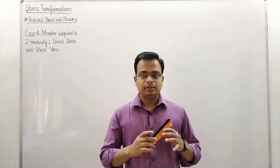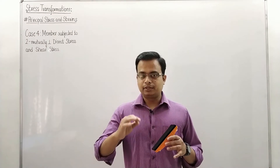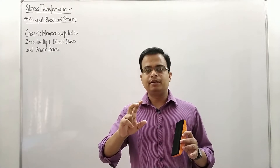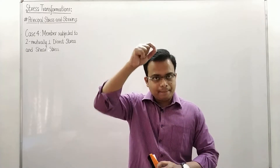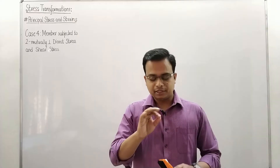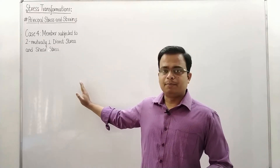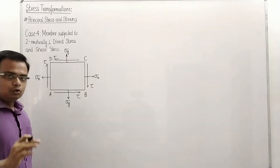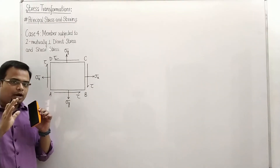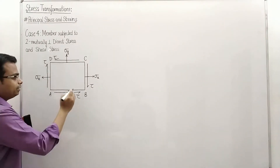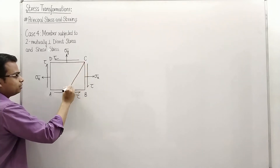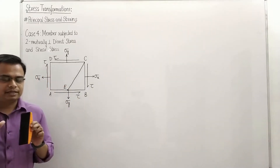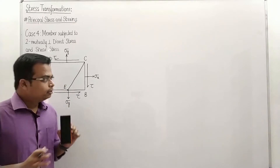Hello everyone, this is Manas, your friend and tutor. Let's kick start with Case 4, which is essentially a combination of Case 2 and Case 3. That means there are going to be two mutually perpendicular stresses sigma x and sigma y, also accompanied with a shear stress. Let me make a figure of that member and analyze it. The thickness has to be taken as unity.